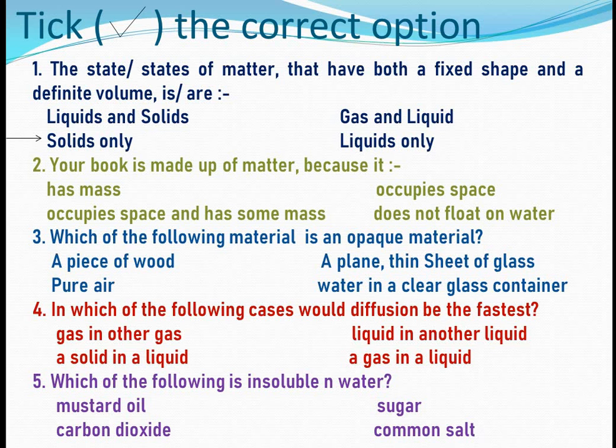Second: your book is made up of matter because — options include it has mass, it occupies space, it occupies space and has some mass, or it does not float on water. The correct answer is: it occupies space and has some mass.